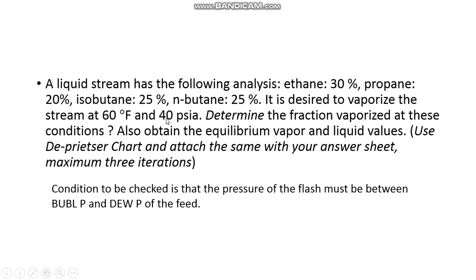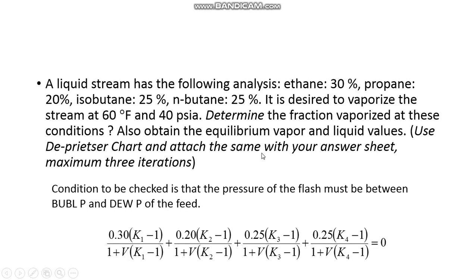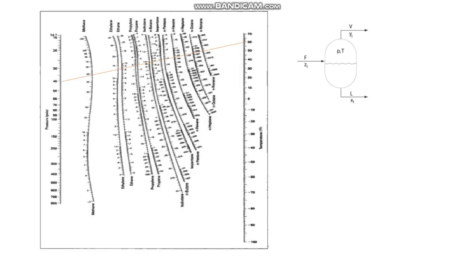You can cross verify. If not, you can take any pressure which is in between bubble point and dew point and can perform this further analysis. Otherwise, the mathematics remains same: ZI into Ki minus 1 over 1 plus V by F times Ki minus 1 equals 0. So now I have substituted the values of composition 0.3, 0.2, 0.25, 0.25, K1, K2, K3, K4 are the values of K. Now the difference here between the previous problem and this problem is that since temperature and pressure are given, I only drew one line corresponding to the given temperature and pressure and I get K1, K2, K3, K4 for ethane, propane, n-butane, and isobutane.